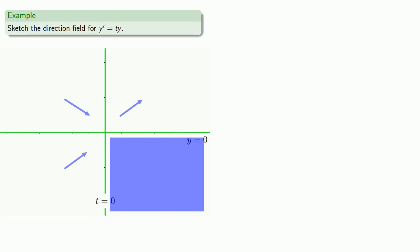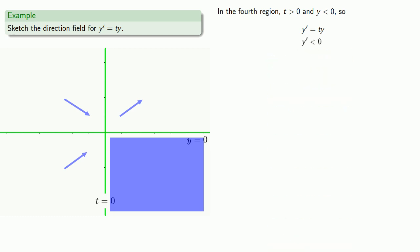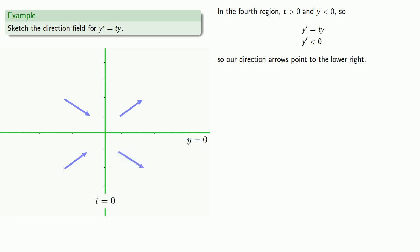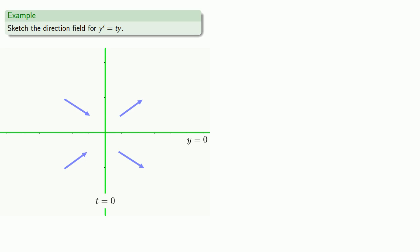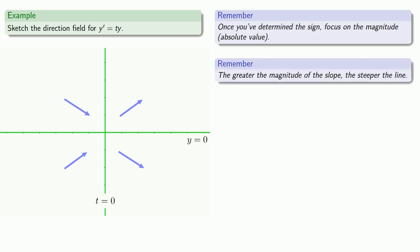In the fourth region, t is positive and y is negative, so our derivative will be less than 0, and our direction arrows will point to the lower right. It's helpful to draw a few more direction arrows. Once you've determined the sign, focus on the magnitude of the derivative — the greater the magnitude of the slope, the steeper the line.